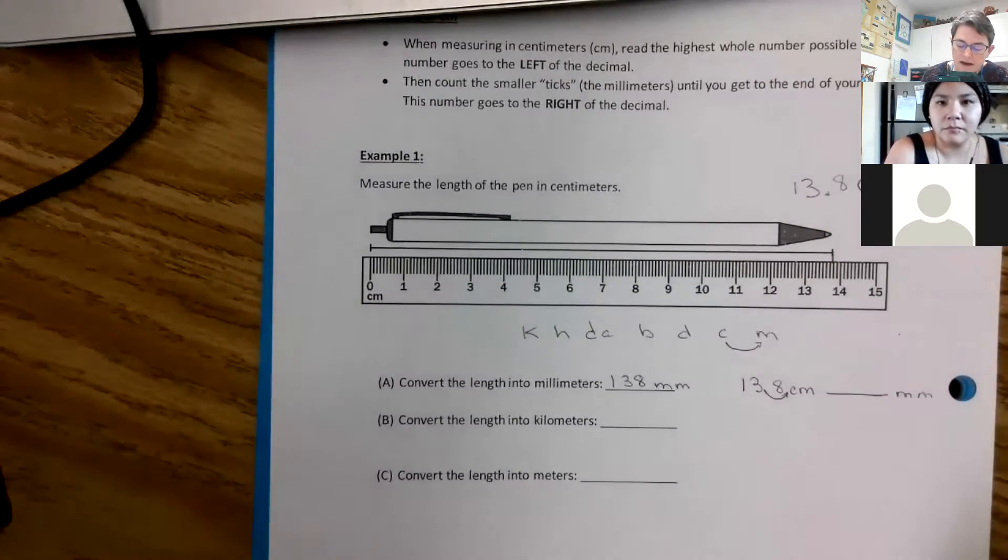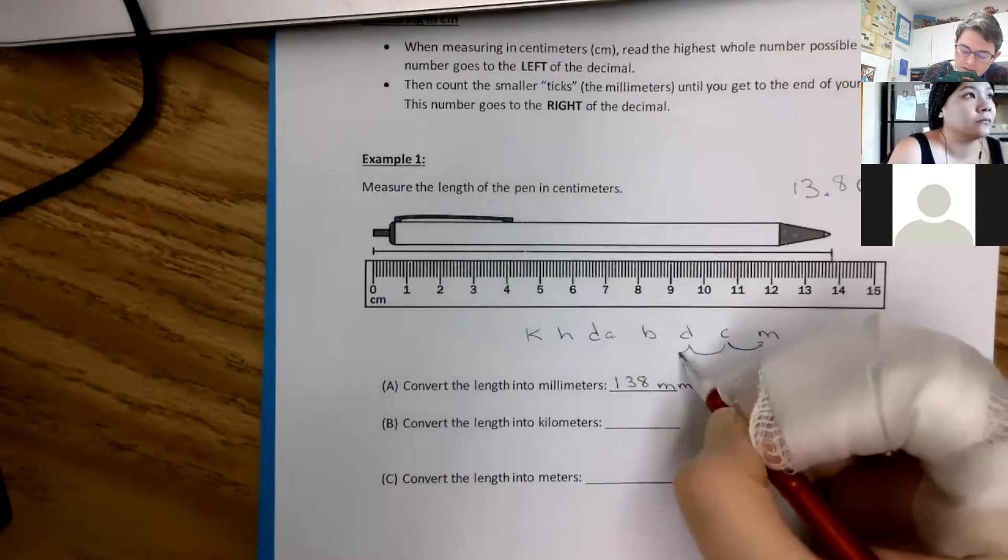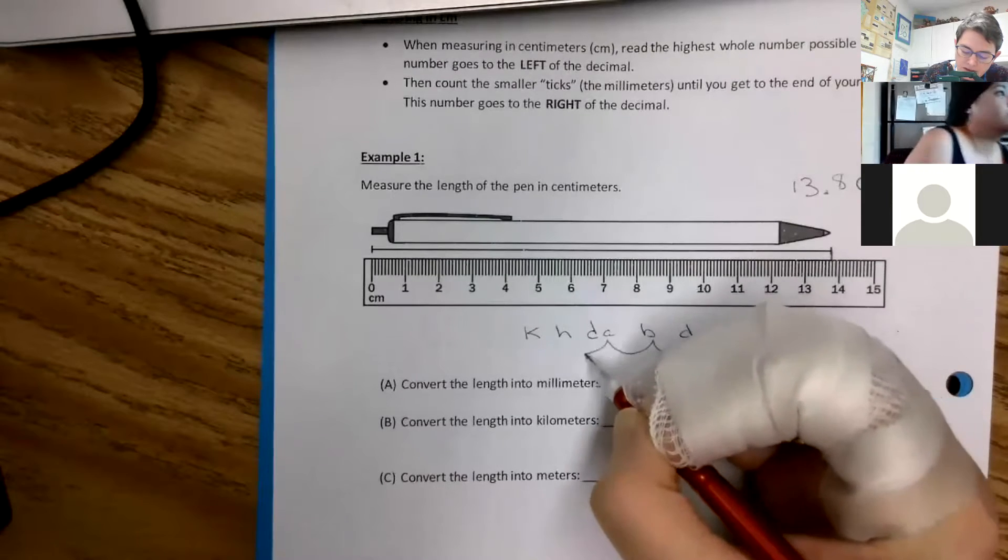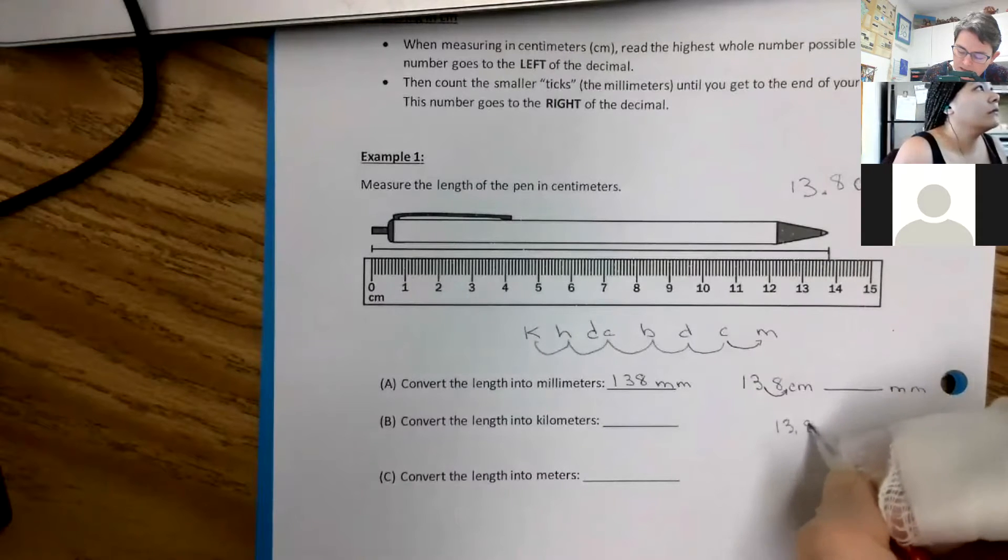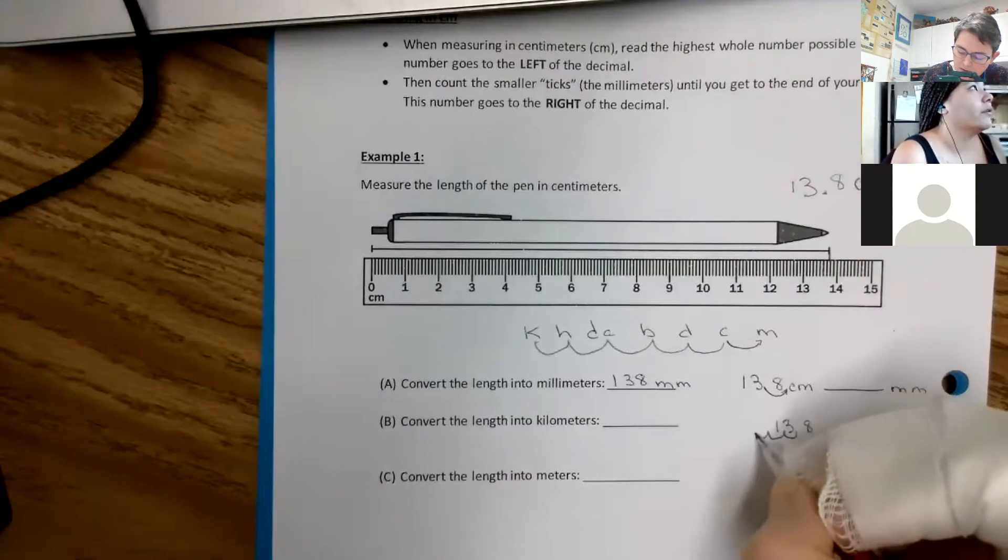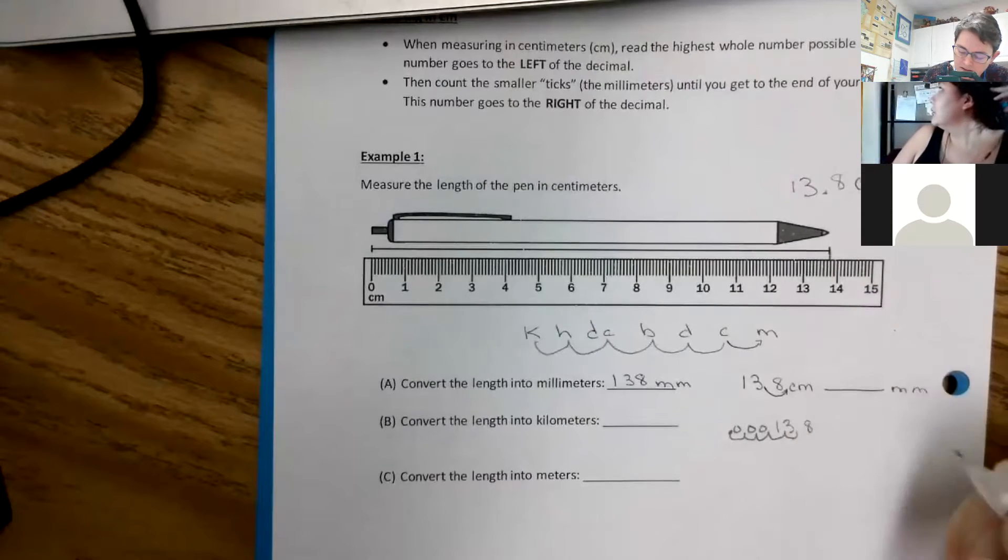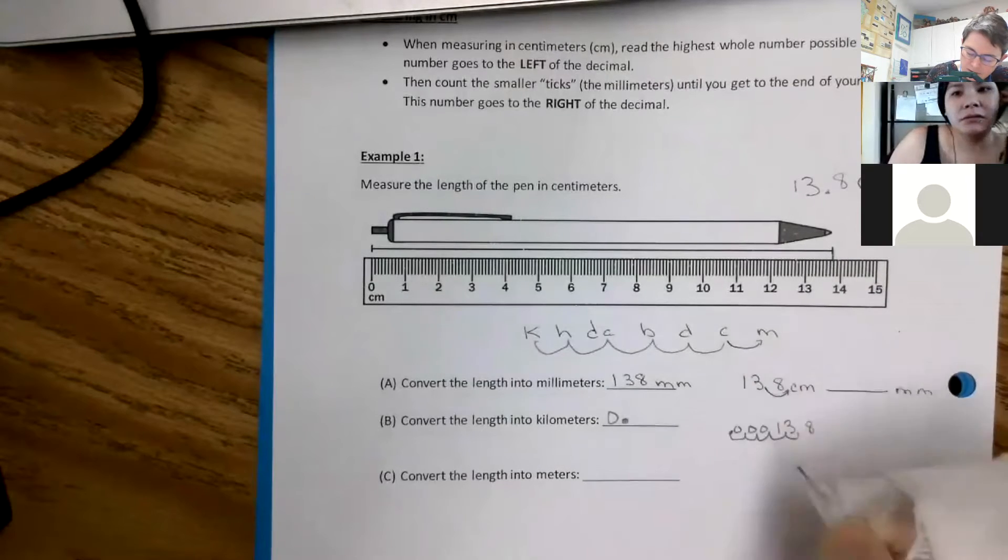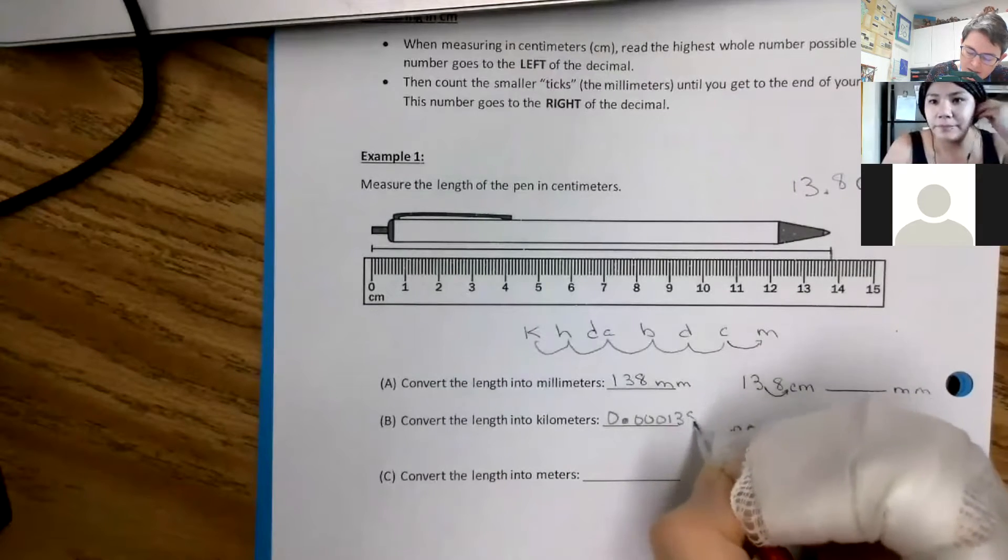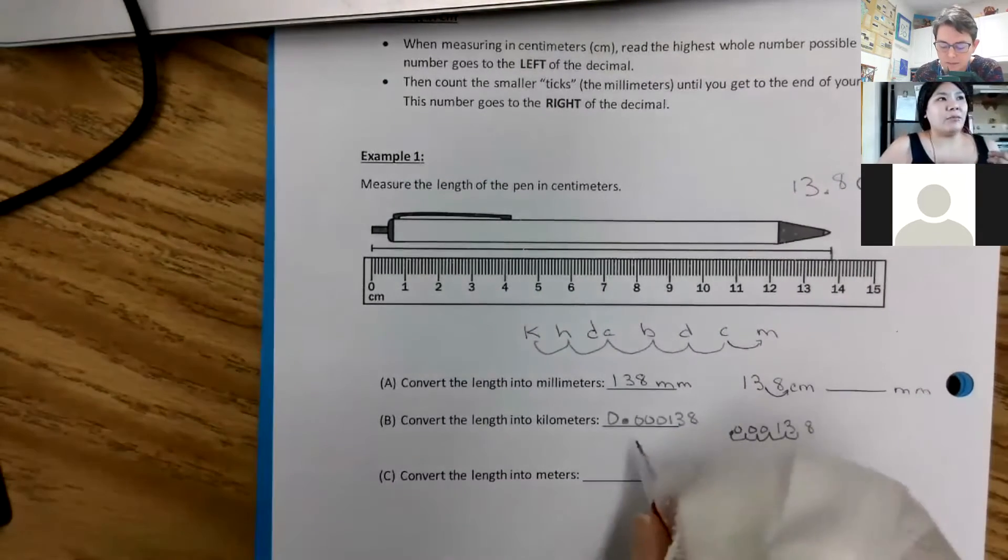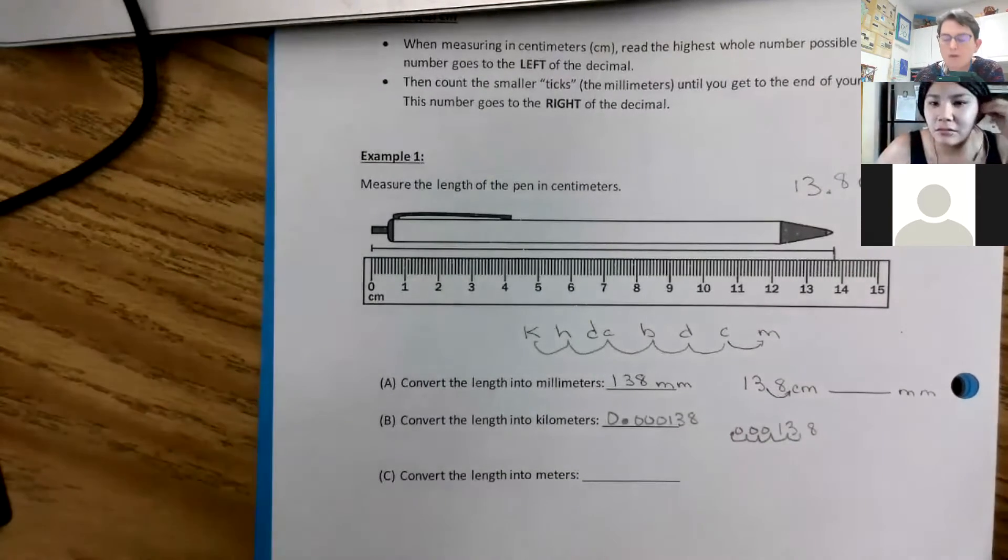If I want to convert it to kilometers, I have to go backwards and I got to count all the way to here. So that's going to be one, two, three, four, five steps. So 13.8, I'm going to go one, two, three, four, five steps. So zero decimal and then I got three zeros that I need. One, three, eight. Please humor me, nice big decimal. I don't want to buy new glasses. And the zero up front just makes it look better.